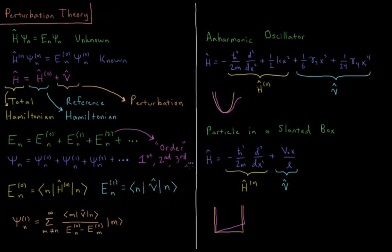Whenever you're faced with a situation you can't solve and want to use perturbation theory, try to find one of the four reference systems we've solved: particle in a box, harmonic oscillator, rigid rotor, or hydrogen atom. Make that your reference Hamiltonian H0, and put everything else into V, the perturbation operator.